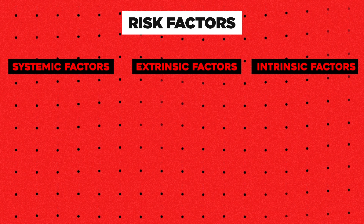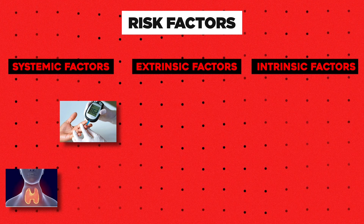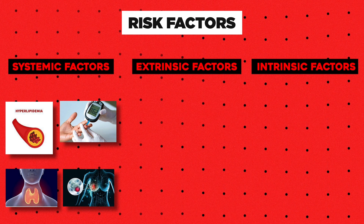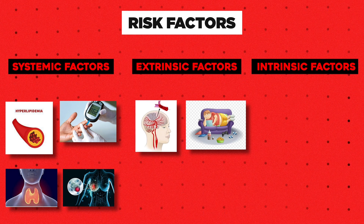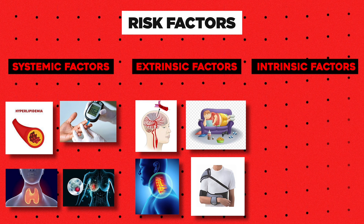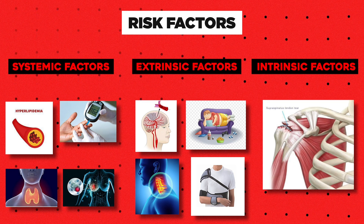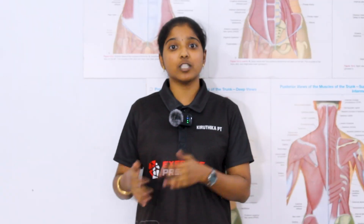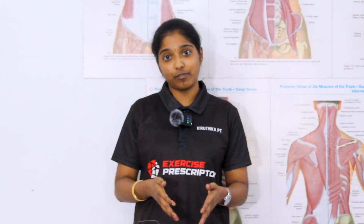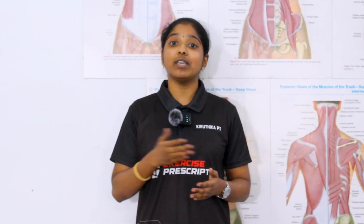Systemic factors include diabetes mellitus, hypo- and hyperthyroidism, hyperlipidemia, and breast carcinoma. Extrinsic factors mainly include sedentary behavior, cerebrovascular accident, prolonged immobilization, and cervical disc pathologies. Intrinsic factors include repetitive shoulder injuries. These risk factors produce more inflammation in the body and increase the proliferation of fibroblast cells, which is why people with these risk factors are more prone to developing Adhesive Capsulitis.